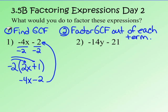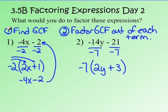Number 2: negative 14y minus 21. They both have a negative in common, and they also both have a 7 in common. So I'm going to factor out negative 7 from both terms. Negative 14 divided by negative 7 is positive 2y. Negative 21 divided by negative 7 is positive 3. Close that in parentheses and put my common factor of negative 7 out front. Negative 7 times 2y is negative 14y, and negative 7 times positive 3 is negative 21. And 2y and 3 have no common factors, so I know I've factored negative 14y minus 21 correctly into negative 7 times the quantity 2y plus 3.